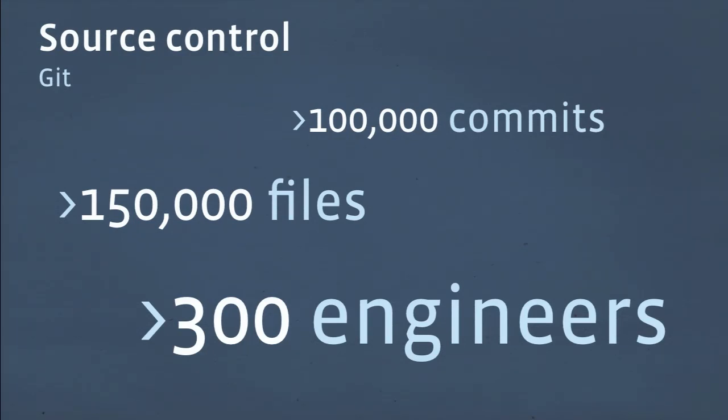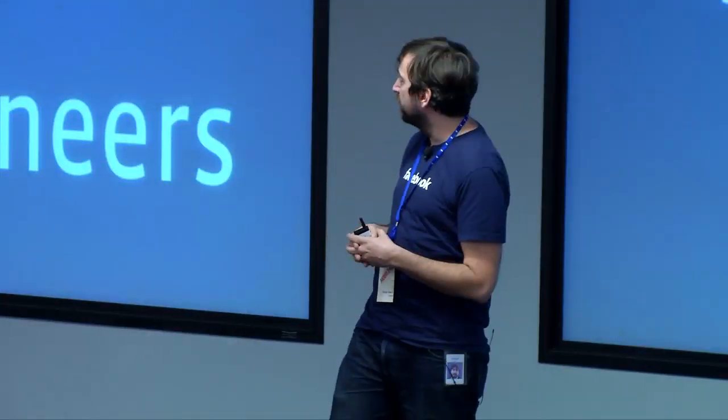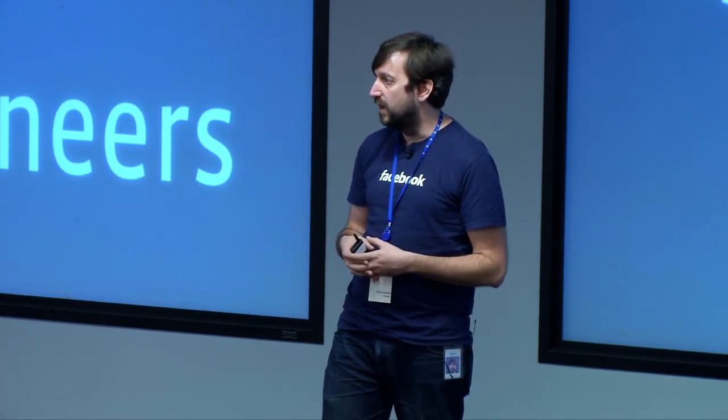Those 150,000 files are worked on by a team of over 300 engineers. That's quite a lot of people banging out quite a lot of code — maybe if you do one or two diffs a day, that's a phenomenal amount of code. So how do we make sure that the code we write, and there's a lot of it, is actually the quality that we would like it to be?